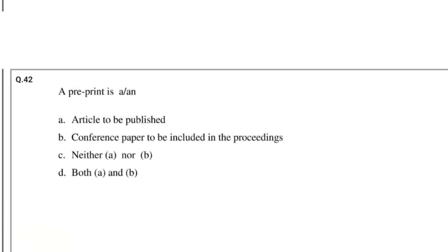Question number 42: A preprint is — options: (A) Article to be published, (B) Conference paper to be included in the proceedings, (C) Neither A nor B, (D) Both A and B. The answer is Both A and B.